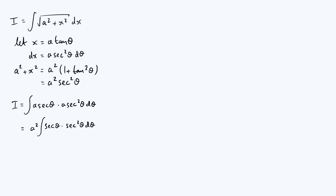The reason I'm not combining into sec cubed is that we can apply integration by parts, with u equal to sec θ and dv/dθ equal to sec squared θ. I'm choosing it this way around because sec squared is easy to integrate — as discussed, sec squared is the derivative of tan — so v is just tan θ.